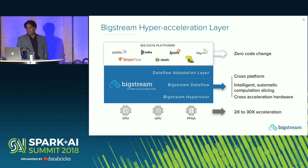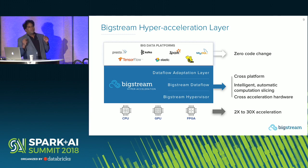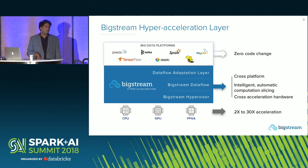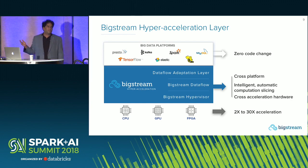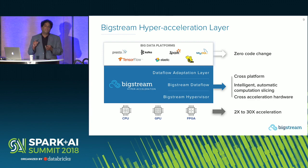At the top of the architecture is the data flow adaptation layer, which adapts these different DAGs to what I'll call a canonical BigStream data flow, whose operations and stages have been pre-accelerated or pre-compiled for the target hardware. That's how we can talk about 2x to 30x acceleration, depending on your hardware mix and application characteristics. The real differentiator from other acceleration technologies is zero code change — we deal with the DAG, we compile the DAG, we can't touch the application even if we wanted to. No library calls, no compiler pragmas.